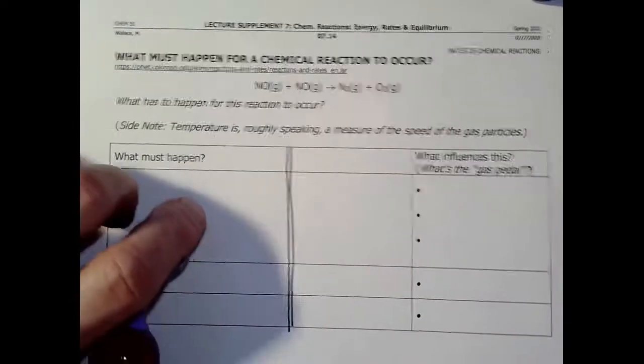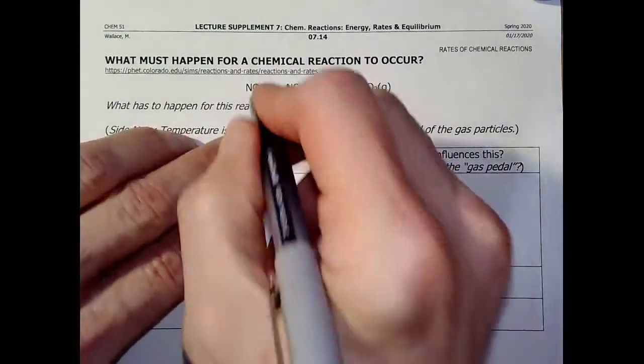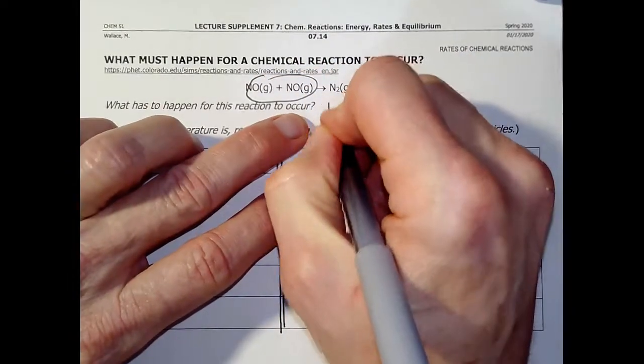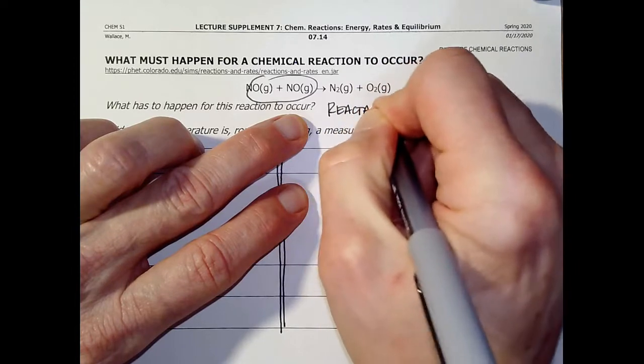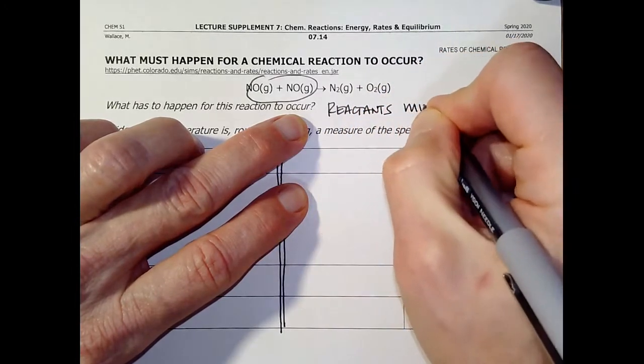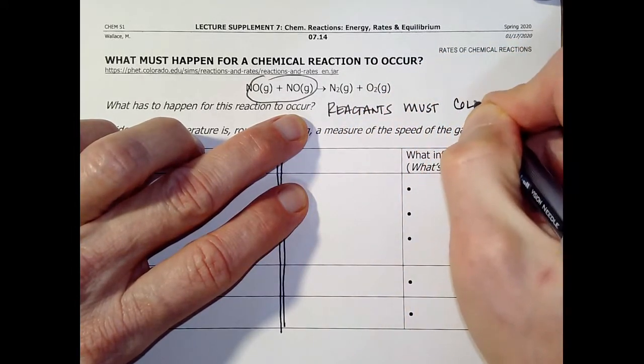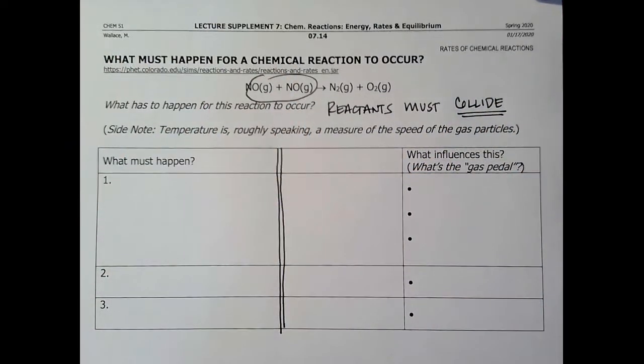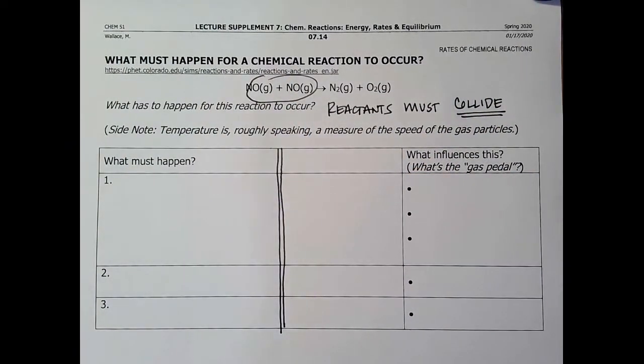They've got to find each other and they've got to hit. So we would say, well, we have to have those two, the reactant particles, reactants must collide. We call this collision theory. The particles have to hit each other to react.